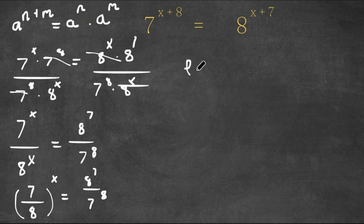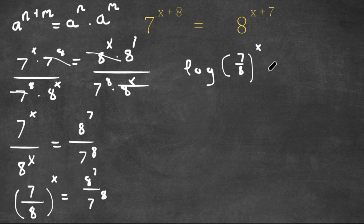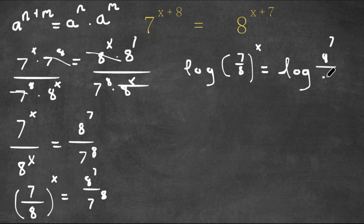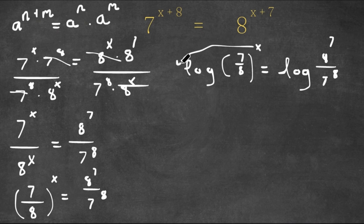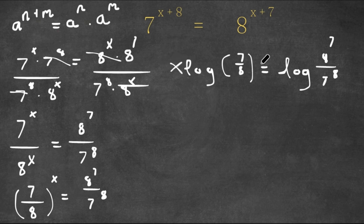Now, I'm going to take the log on both sides. So now we have log of 7 over 8 to the power of x. The power rule of logarithms states that if we have a power for the logarithm, which in this case is x, we can actually move this to the front of the logarithm. So now this is actually going to be equal to x times log 7 over 8.